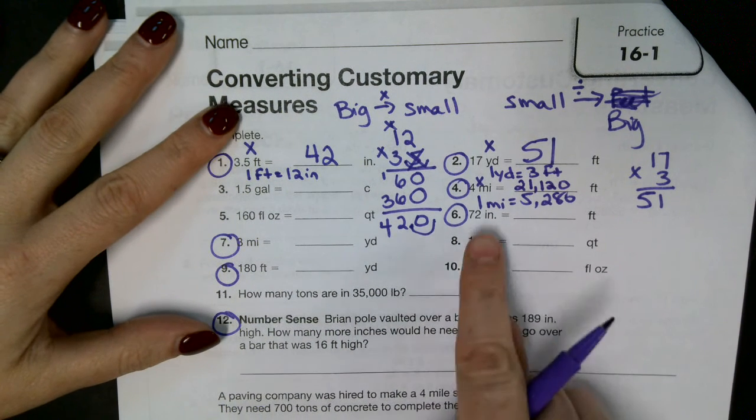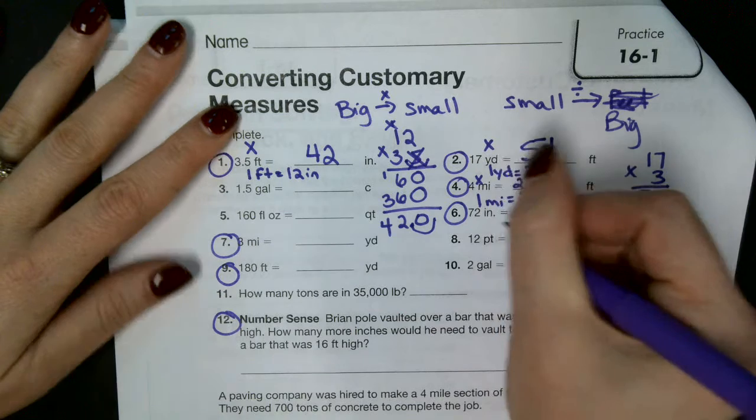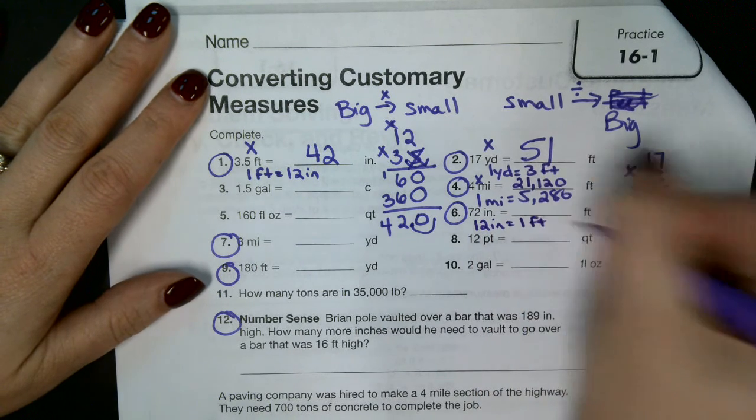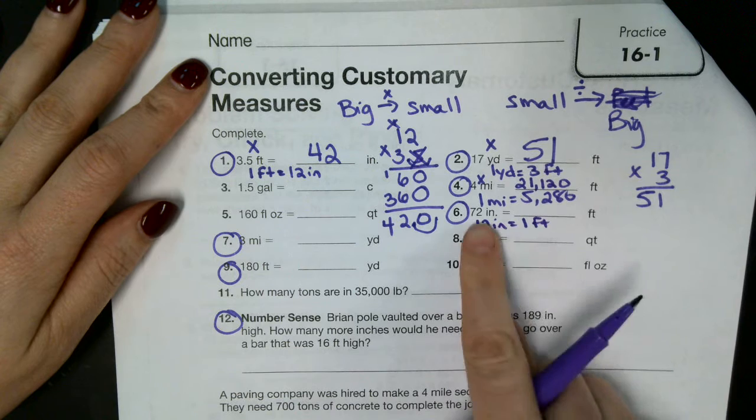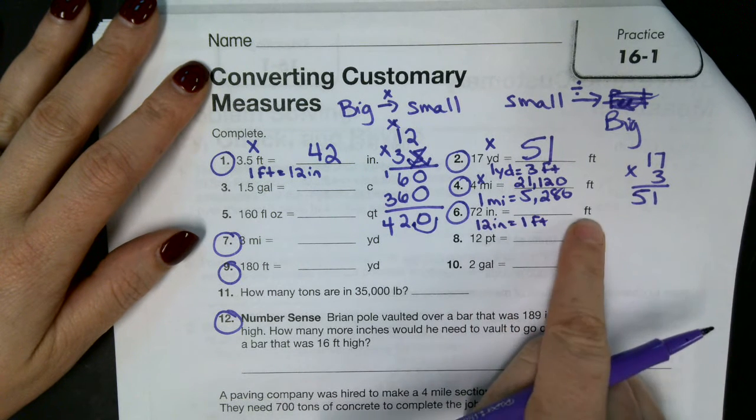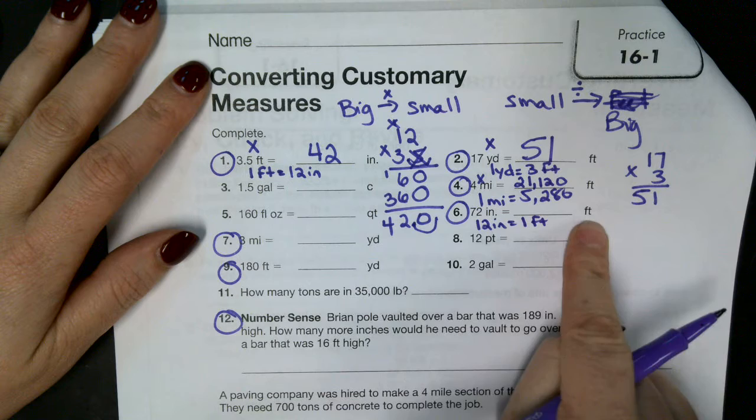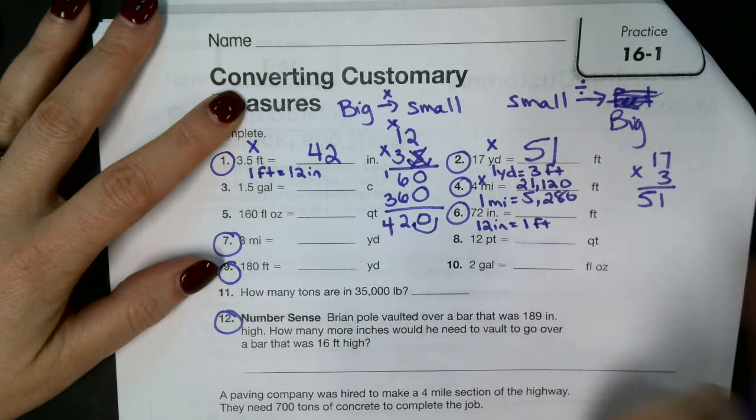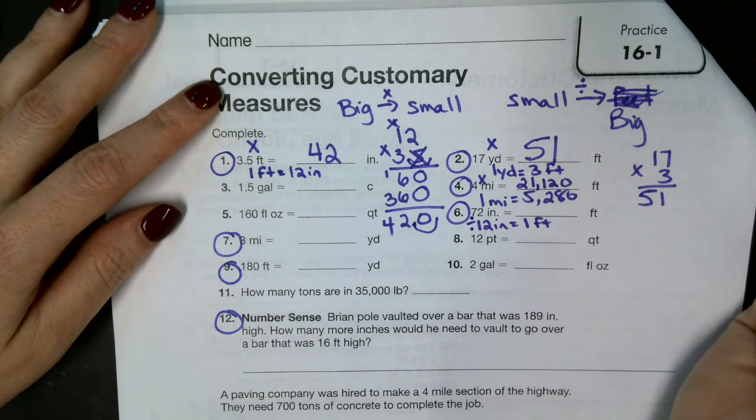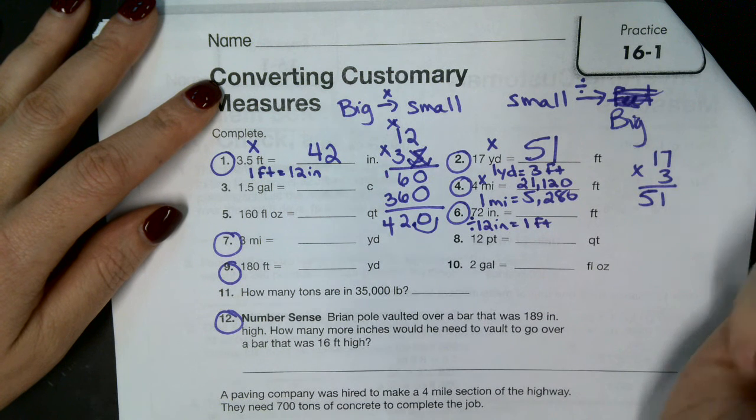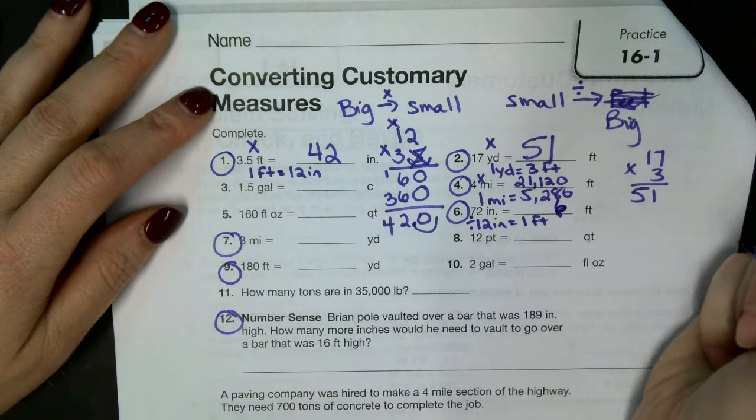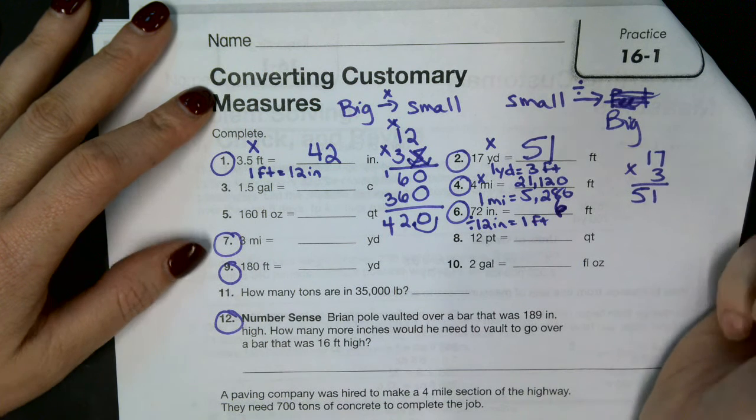Number six. 72 inches in feet. So we know for a fact 12 inches equal 1 foot. So inches and feet. Which one's the bigger one here? Feet. Feet are bigger. Inches are smaller. So we're going from small to big. If you're going small to big, then you do what? Divide. Then you divide. What do you divide in this one? What's 72 divided by 12? Awesome. Six what, guys? Six feet or two yards. Oh, look at you. Six feet or two yards. Very good.